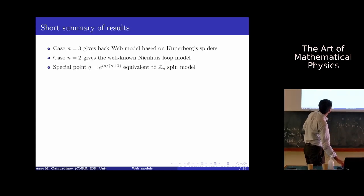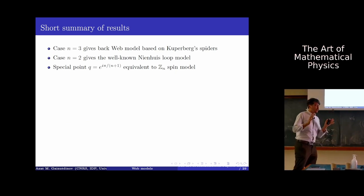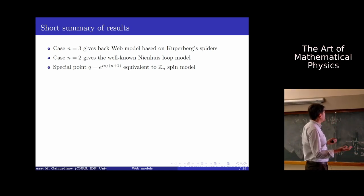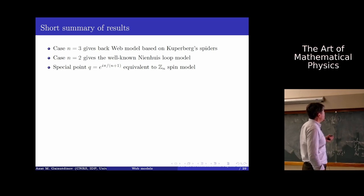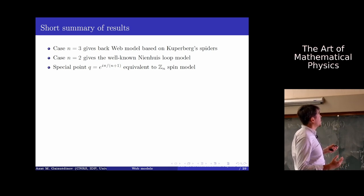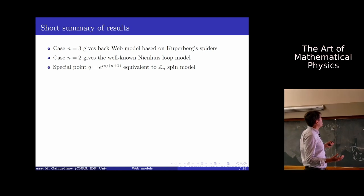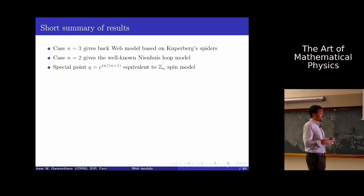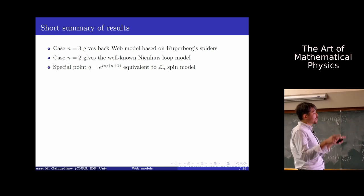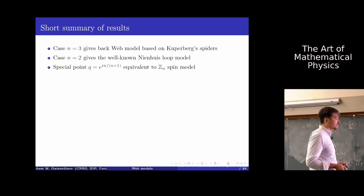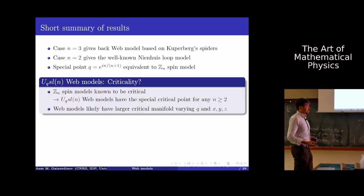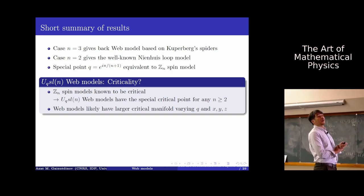These are essentially all the rules needed to evaluate the statistical weight. One can also attach local fugacities for vertices and bonds — just many more of them. When N=3, this general model reduces to the Kuperberg spider model described earlier. When N=2, we recover the Nienhuis loop model. At special roots of unity, there is again a precise map to the Z_N spin model, and the webs describe the domain walls or boundaries of spin clusters in the spin model. Partition functions agree.